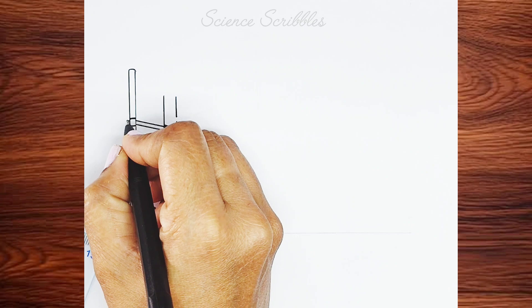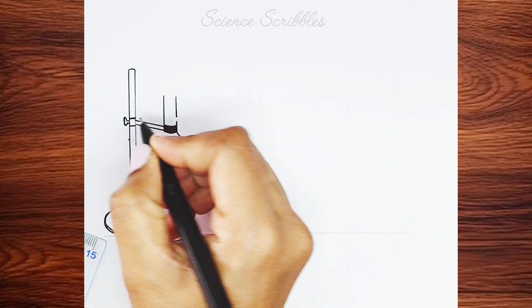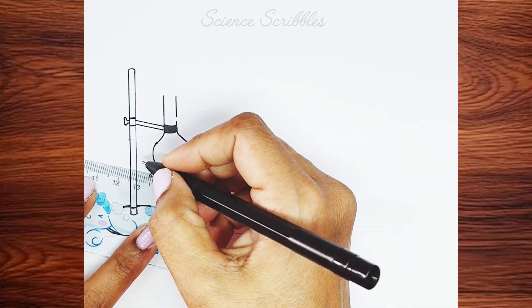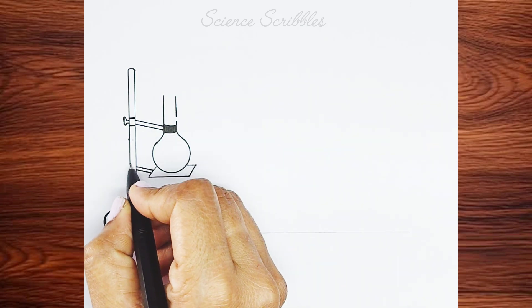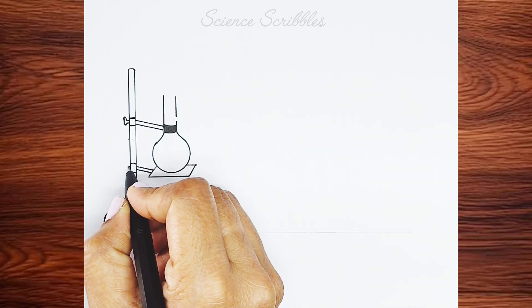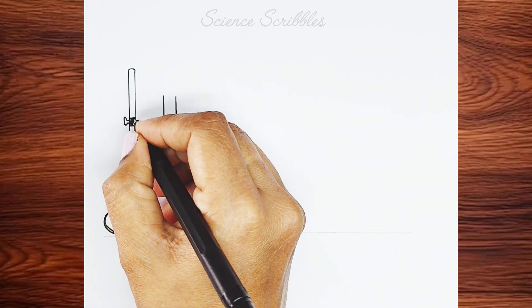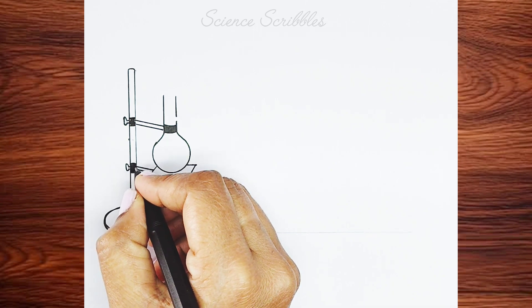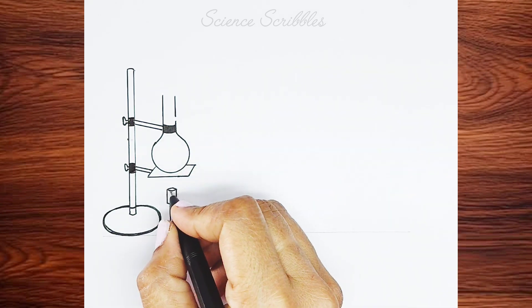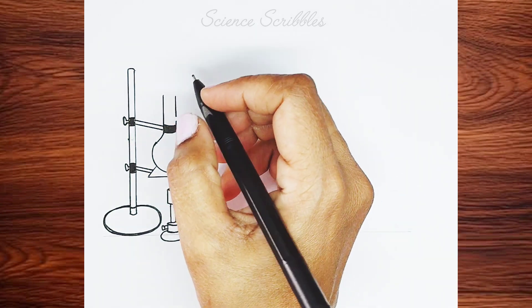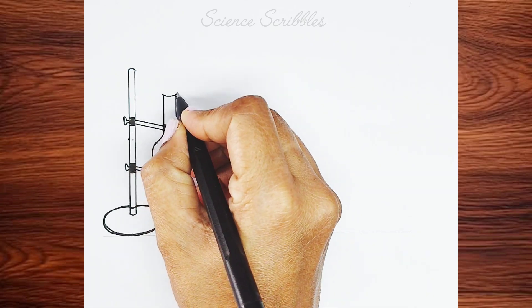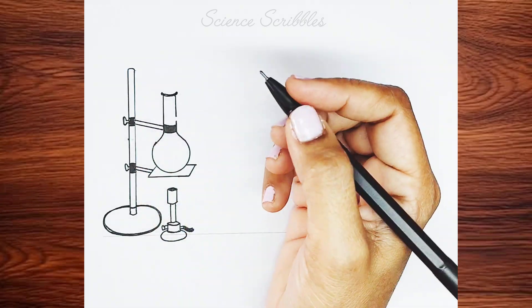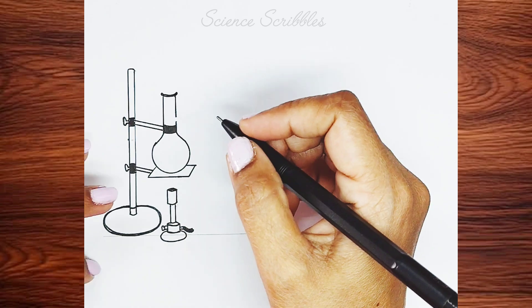If you want, you can color the diagram. Now, let's draw the stopcock or stopper for the flask. Follow along as I use a short ruler to draw these lines.